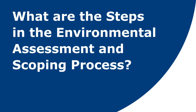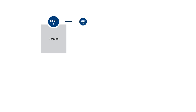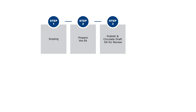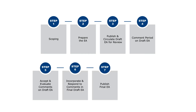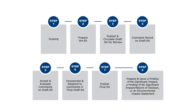There are a number of steps in the environmental assessment process. They include scoping, preparation of the draft environmental assessment, circulating the draft environmental assessment, opening a public comment period, evaluating the comments, responding to the comments, and publishing a final environmental assessment. The final step could include issuing a finding of no significant impact along with a record of decision, or issuing a notice of intent to prepare an environmental impact statement.